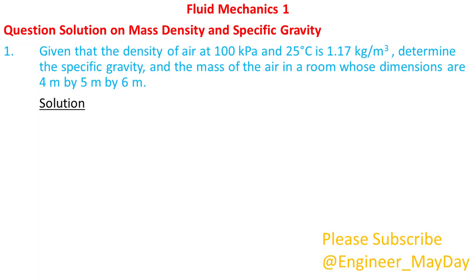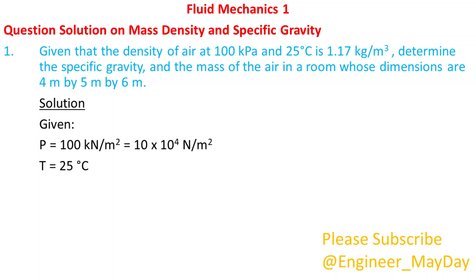Solution. Given: Pressure P equals 10 times 10 to the power 4 newtons per square meter. Temperature T equals 25 degrees Celsius. Density of air equals 1.17 kilograms per cubic meter.